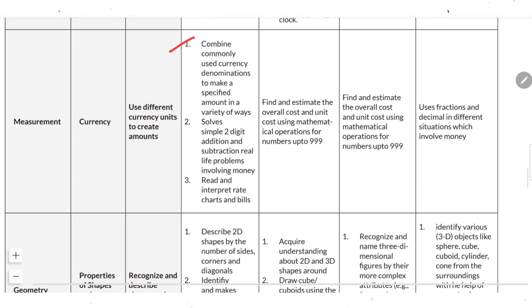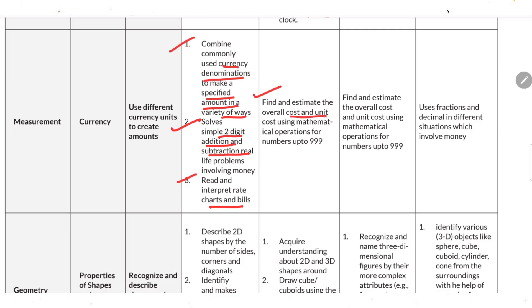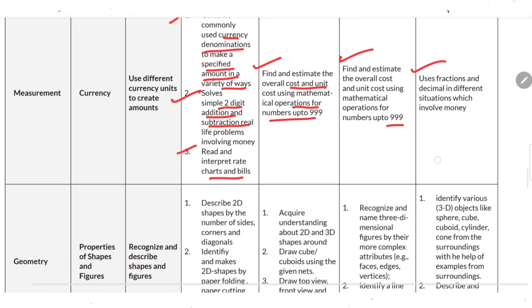For currency: combine commonly used currency denominations to make a specific amount in a variety of ways. Solve simple two-digit addition and subtraction real-life problems. Read and interpret rate charts and bills. Find and estimate overall cost and unit cost using mathematical operations for numbers up to four digits. Also apply fractions and decimals in situations involving money.